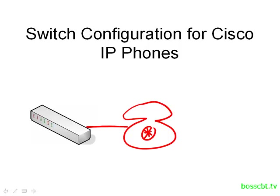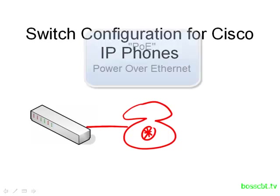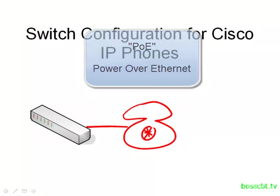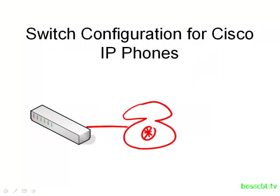A Cisco IP phone can be powered by the switch itself — you might have heard of this — it's called Power Over Ethernet, or PoE. If the switch is capable of performing this function, then you don't have to actually plug the IP phone into a wall, which is pretty convenient.